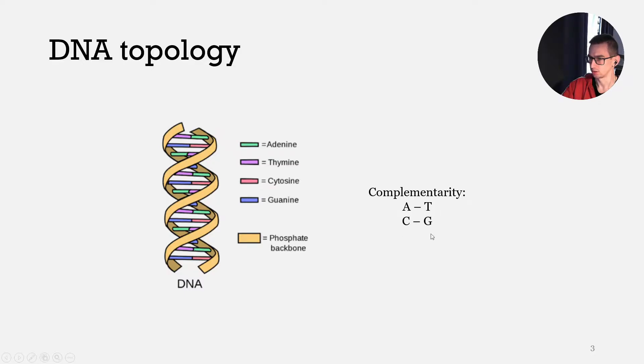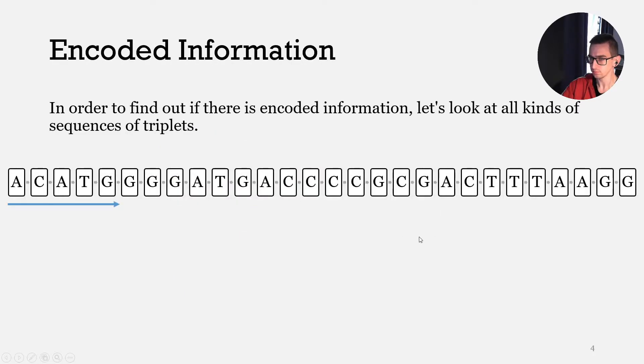A corresponds to T, C corresponds to G. Now suppose that we have some DNA strand and we know the direction from the beginning to the end. In our case we start from the left side and go to the right. To find the encoded information, let's look at all kinds of sequences of triplets.